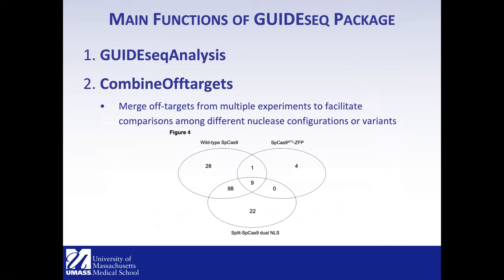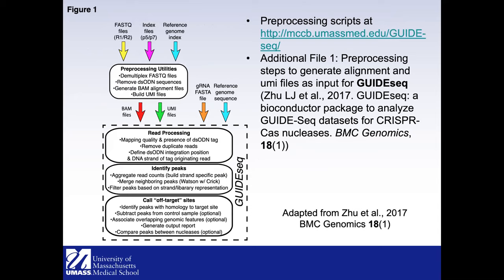Analysis of GUIDEseq data is not straightforward. When we analyzed data for our collaborators, we developed the GUIDEseq package, which has only two functions. The main function is guideseq-analysis, which does everything in one call. The combine-off-targets function compares different experiments or configurations to see overlap. Pre-processing scripts are available on GitHub and in the publication to generate a BAM file and UMI file — that is all the GUIDEseq package requires as input.